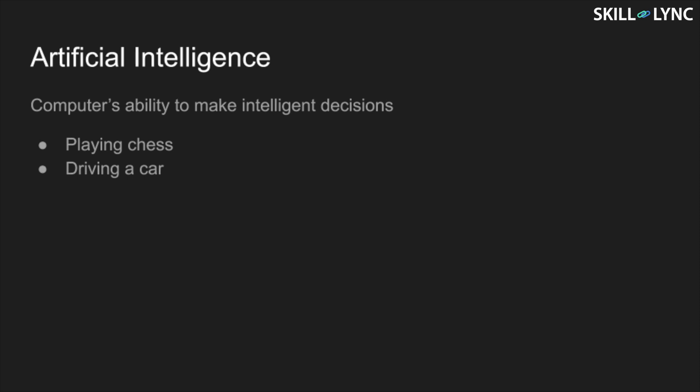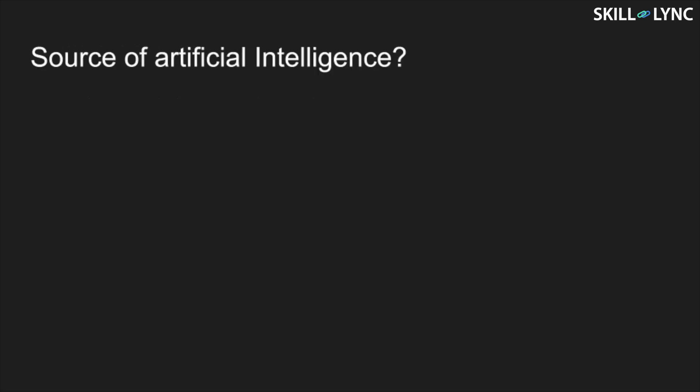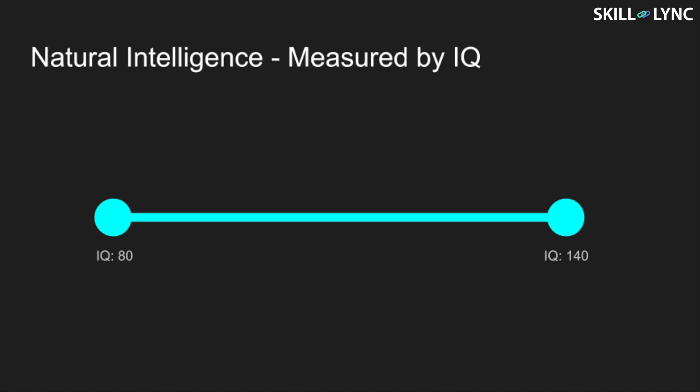So when people say artificial intelligence, where does this intelligence exist, or what is the source of this intelligence? This question can be answered with much more clarity when applied to natural intelligence. When we compare two people at the opposite end of the IQ spectrum, you can easily say that one of them is more intelligent and that the source of their intelligence is their well-developed brain.